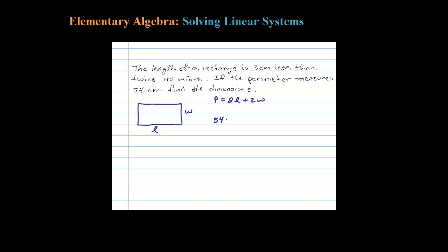The perimeter is 54 centimeters, so 54 equals 2L plus 2W. When you use two variables, you need two equations. The second equation comes from the extra information: the length is three centimeters less than twice its width. So L equals 2W minus 3. Here's our system of two linear equations.